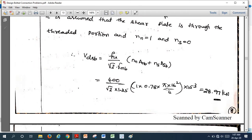You know the formula. If we substitute into the formula, where area is 78% of Asb, you will get 28.97 kN. This is the shear strength of a bolt in single shear.